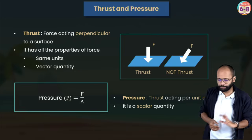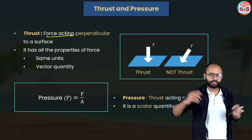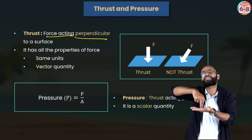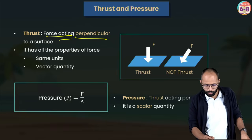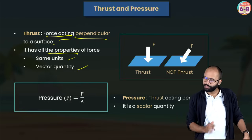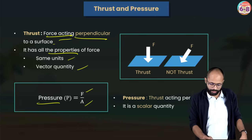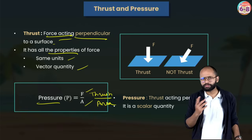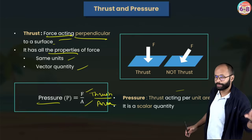Now let's talk about pressure. Before that, we need to understand thrust. Thrust is not some special thing — it is force only. Specifically, it is the force acting perpendicular to a surface. A special name is given to perpendicular force: thrust. Thrust has all the properties of force — same unit (newton), and it is also a vector quantity.